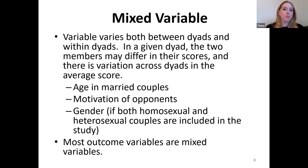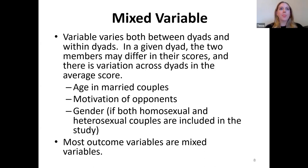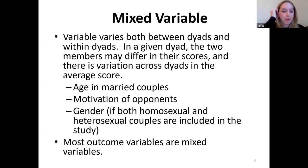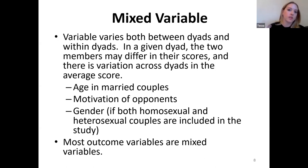The most common type of predictor variable is what's called a mixed variable — it varies both between dyads and within dyads. You can imagine a dyad where the two members have two different scores on something, like different ages in married couples, and there's also variation across dyads on the average score. Individual difference predictors like satisfaction or income at the individual level often tend to be mixed variables. For the analyses we're talking about today, the outcome variables are mixed variables — each dyad member gets their own score, varying both between and within dyads.